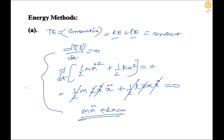It is recommended to skip this total-energy derivative method. Instead, you only need to find kinetic energy and potential energy, and then straightaway obtain omega_n using the equivalent system method, which we will see shortly.